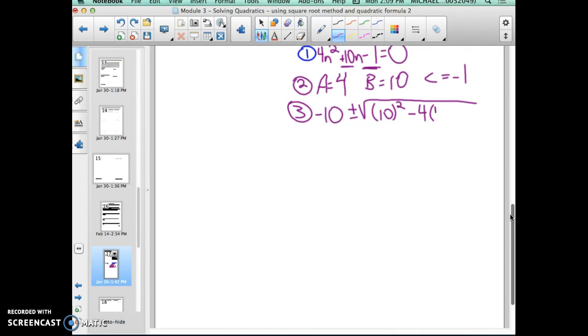My a, which is 4, and parentheses, my c, which is negative 1. All over 2 times my a, which is 4. That is step 3, entering in all the inputs correctly.